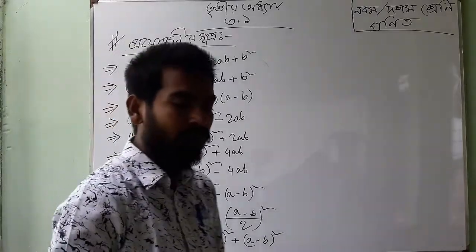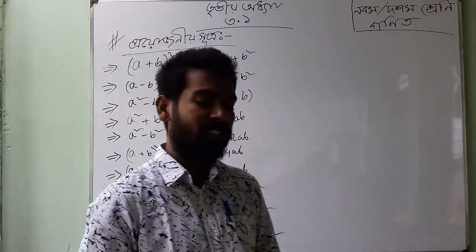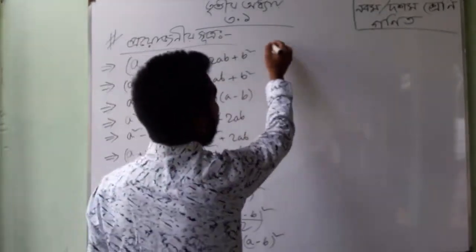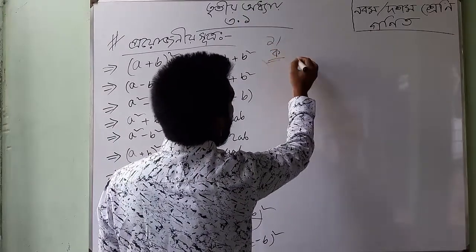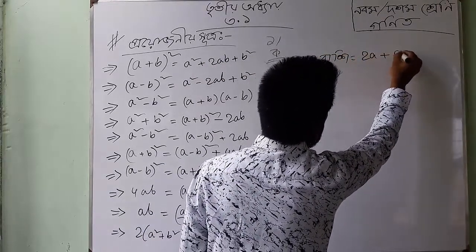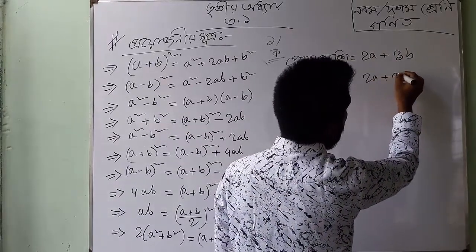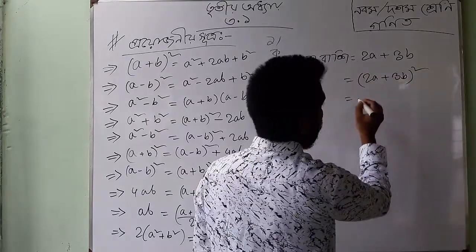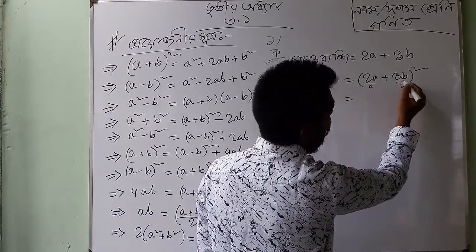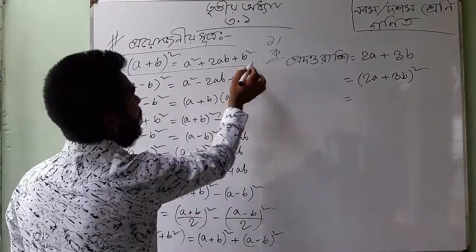Now we can see the first number of 2, which is 1, and the first number of 2 is the first number of 2. We can see 2a plus 3b. So what r 2a plus 3b is the 2a plus 3b. So 2a plus 3b is the 2a plus 3b. So a plus 2b plus b plus square.